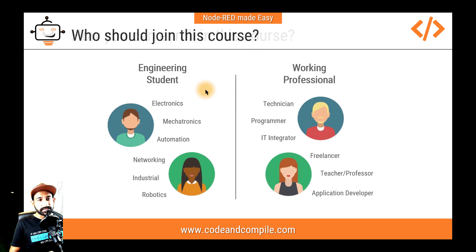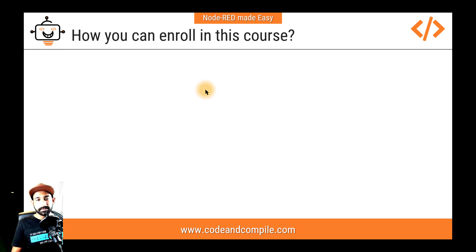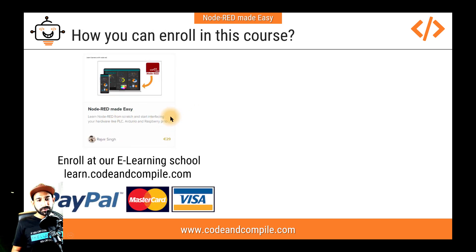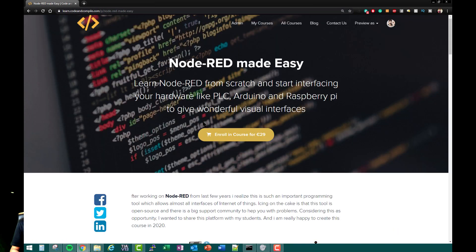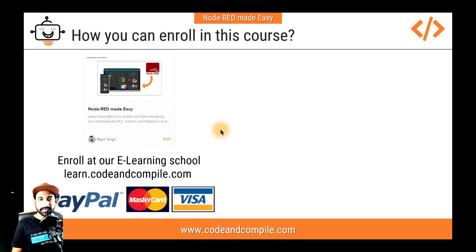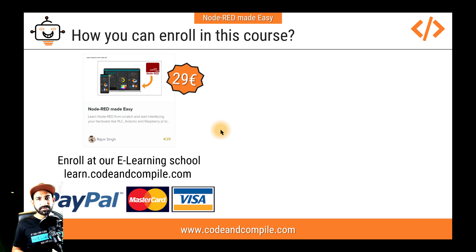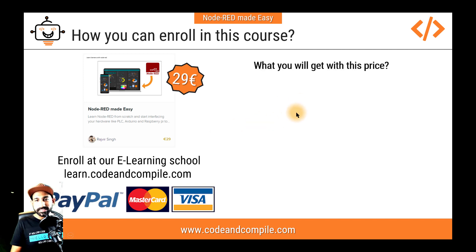Finally, let me tell you how to enroll in this course and what you'll get. You can go to my website, learn.codeandcompile.com, and find this course. The cost, at the time I made this video, is 29 euros — a very cost-effective price. I don't sell courses for 200 or 300 euros; I always keep prices affordable for all my audience, so both students and working professionals can buy it easily.